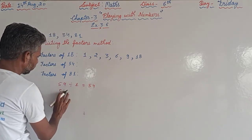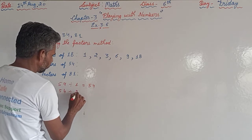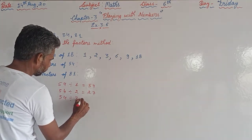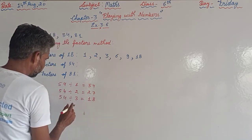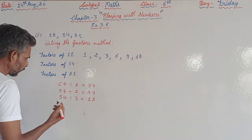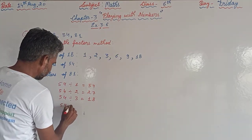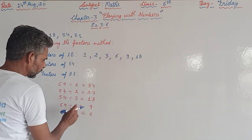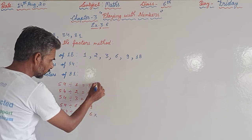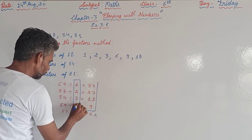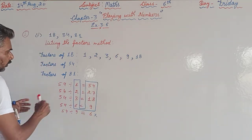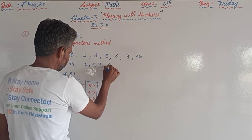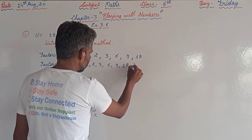For 54: 54 ÷ 1 = 54, 54 ÷ 2 = 27, and since 5+4=9, 54 is divisible by 3 as well. 54 does not come in the table of 4 or 5. 54 comes in the table of 6, giving 9, and 6 and 9 are already listed. So factors of 54 are: 1, 2, 3, 6, 9, 18, 27, and 54.